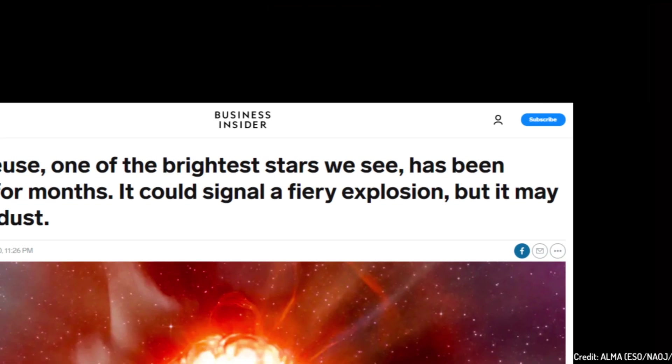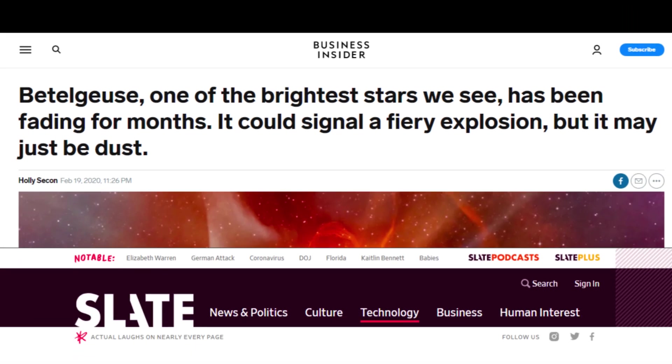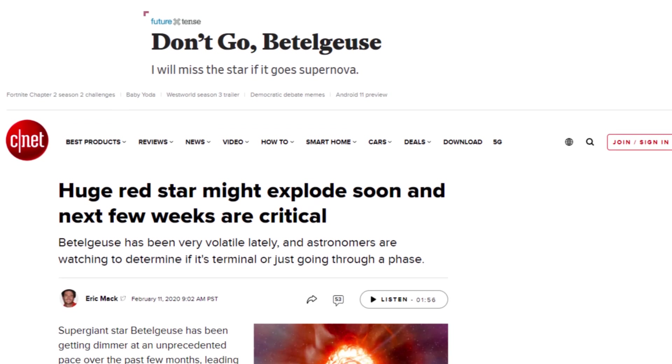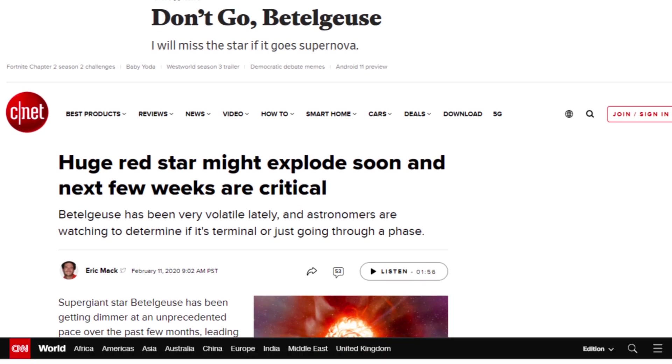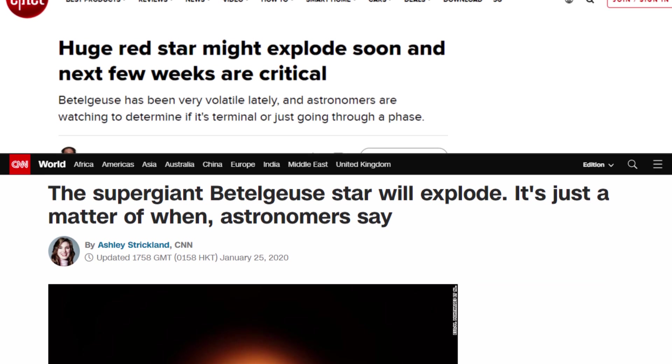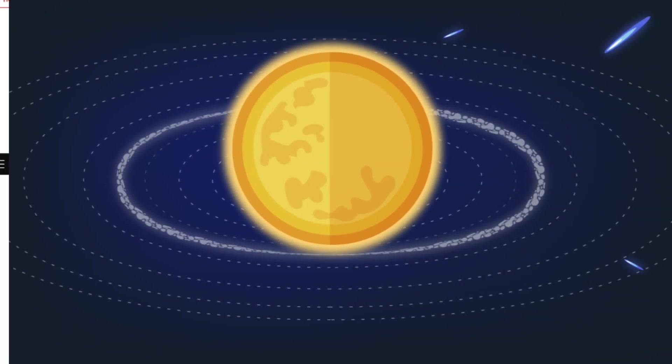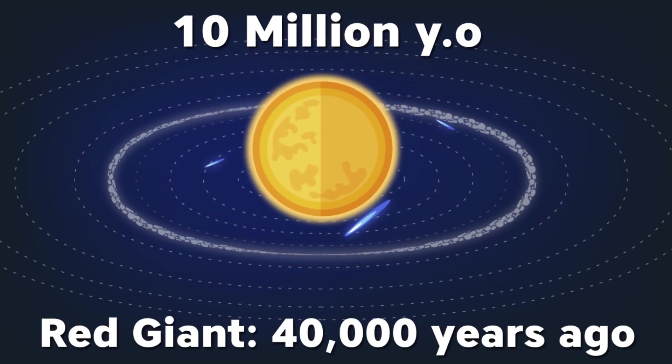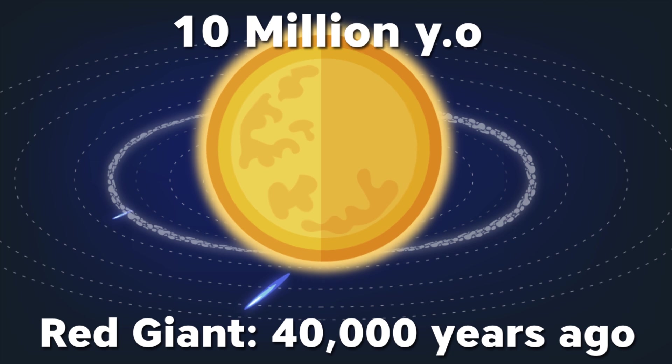Recently, I often see headlines that nearby Betelgeuse is going to explode soon. Well, what these stories often gloss over is that the nearby and soon are relative terms. The way astronomers use them is quite different from the way we use those words in everyday conversation. Let's first look at how soon part. Astronomers estimate that Betelgeuse is approximately 10 million years old and it began expanding into a red giant 40,000 years ago.